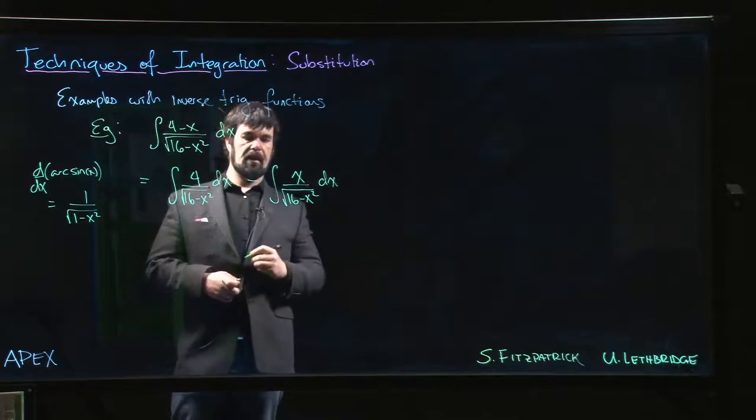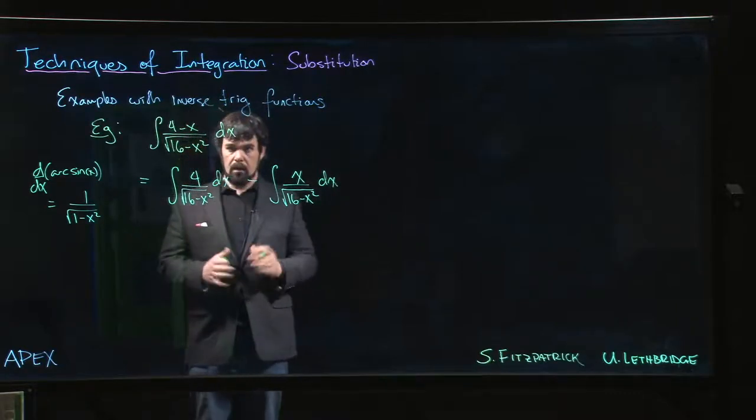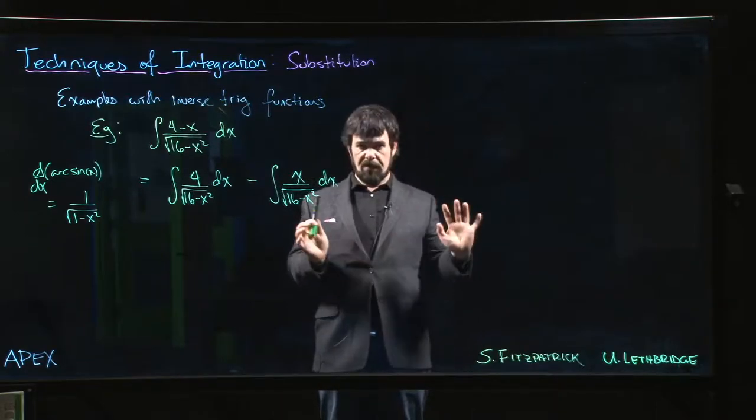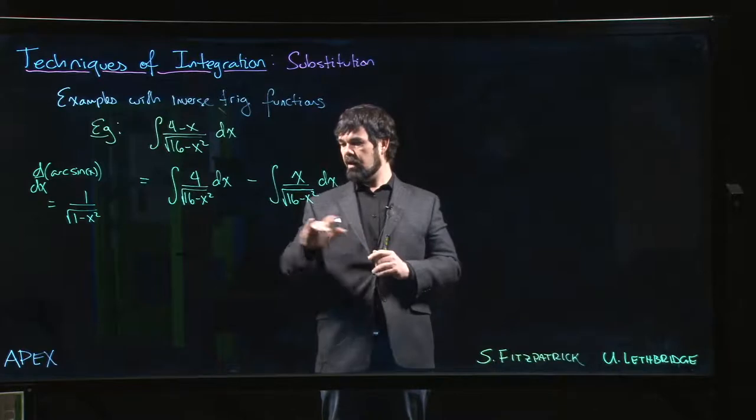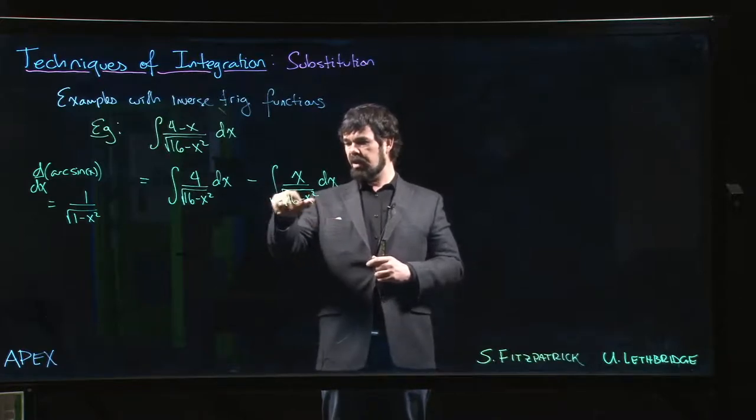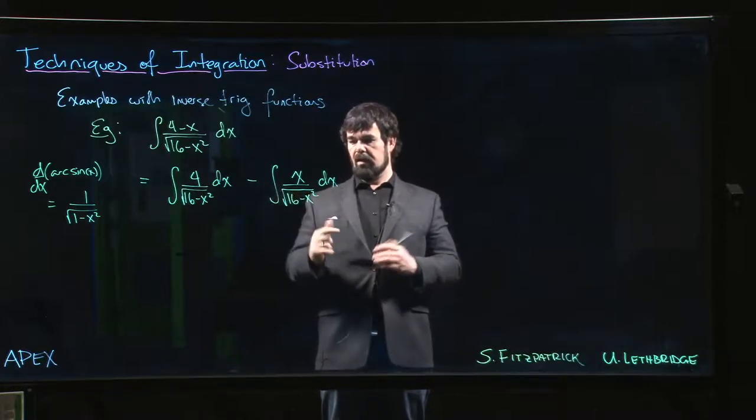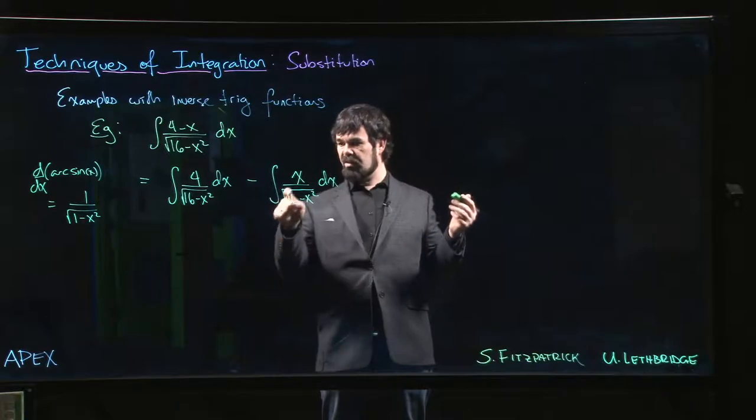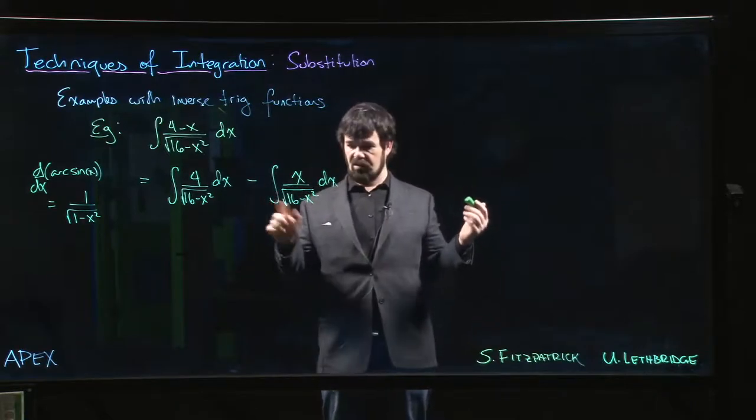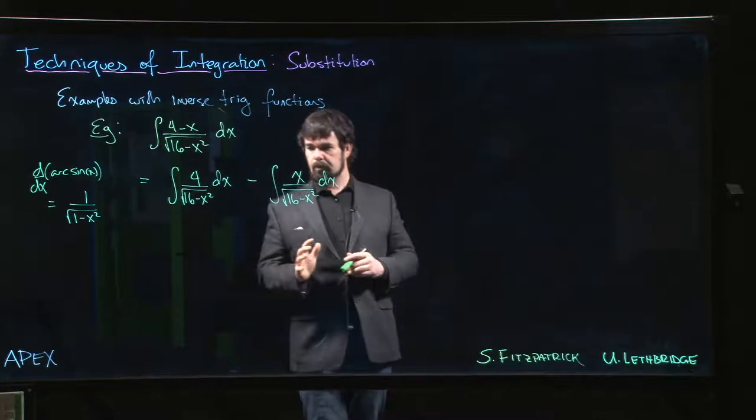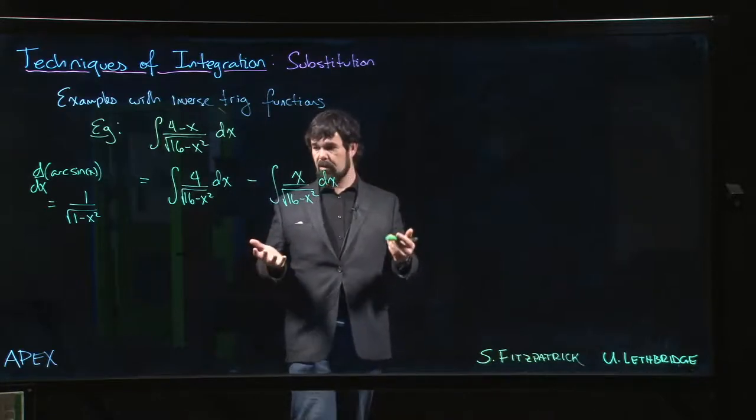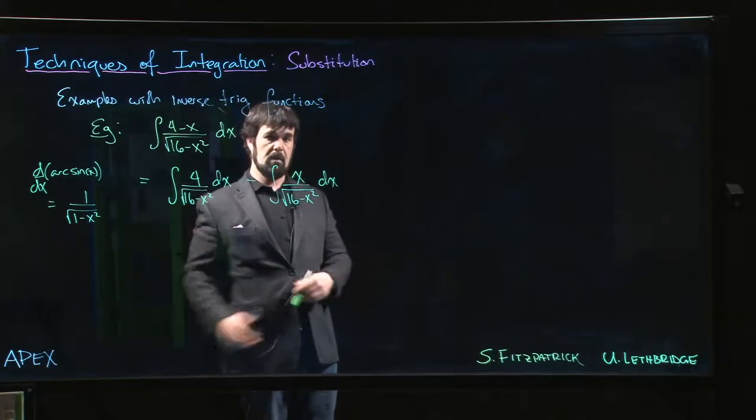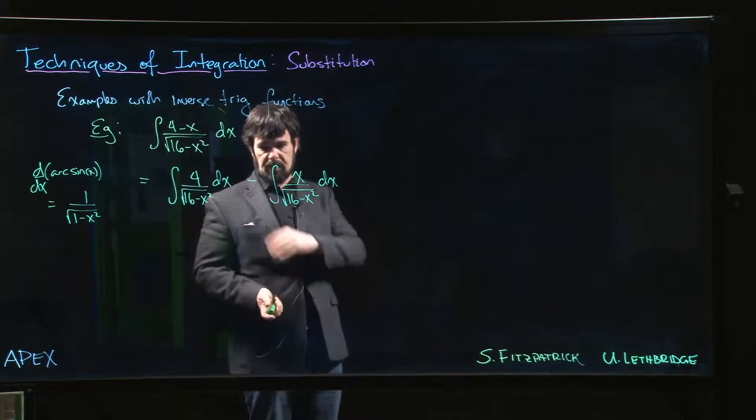And so the trick here is that both of these are going to require u-substitutions but different substitutions. Because over here, well, if we substitute the whole thing under the square root, the derivative of 16 minus x squared, we get minus 2x dx, and except that 2 that's missing, we have the x dx, so this is a simple substitution. Whereas over here we've got to do some work, we got to do a bit of manipulation so that we can bring out this arcsine result. So we're going to look at the two integrals separately.